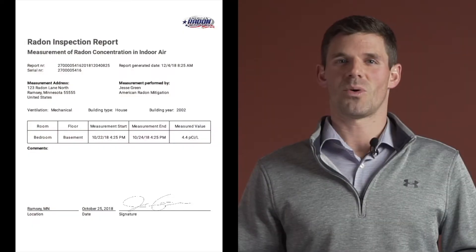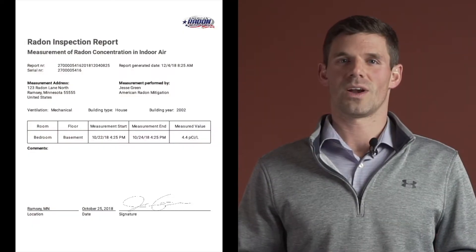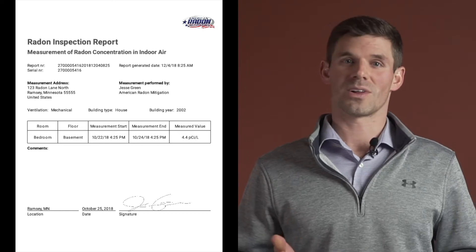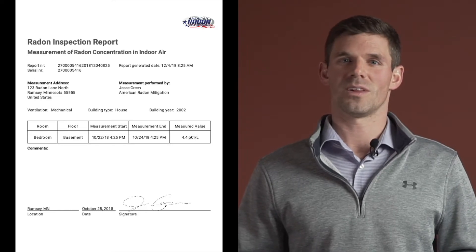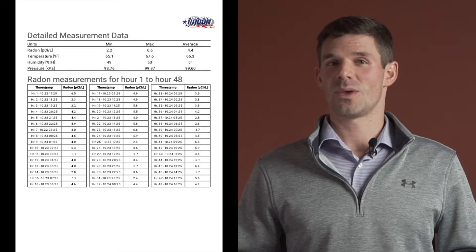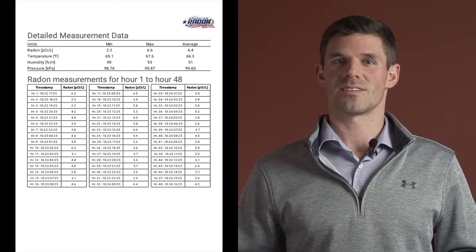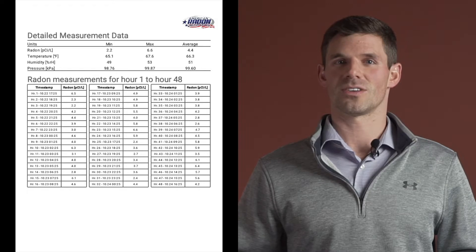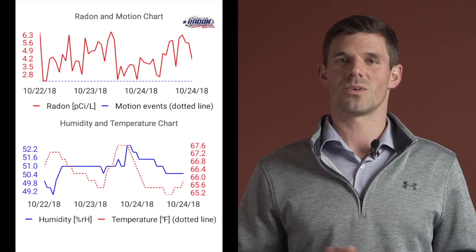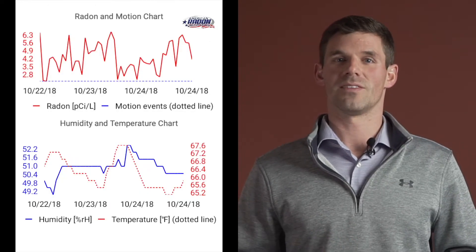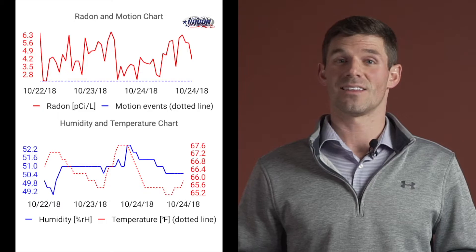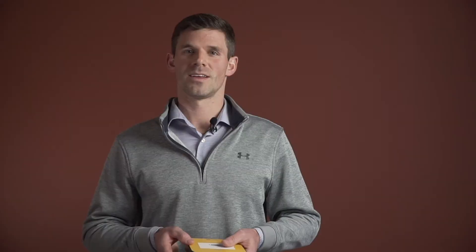You'll get a detailed report from your radon measurement company that might include hourly data as well as charts and graphs. The EPA recommends considering mitigation if your radon levels are between 2 and 4, and they strongly recommend mitigating anything above 4.